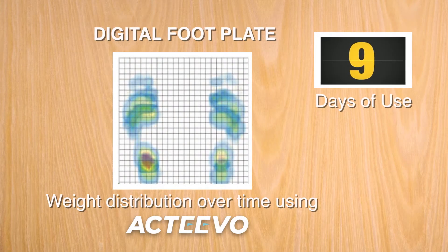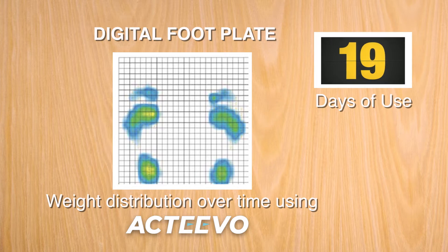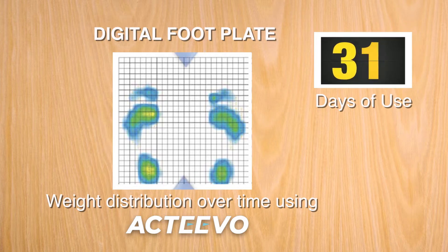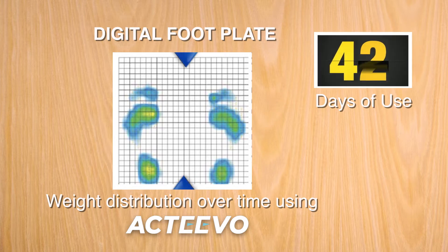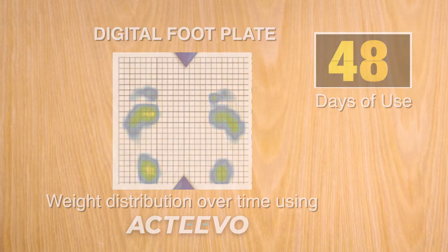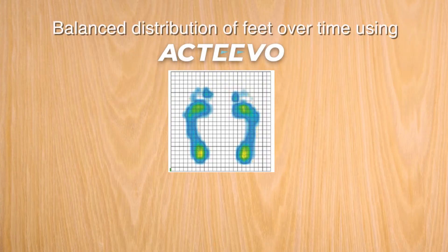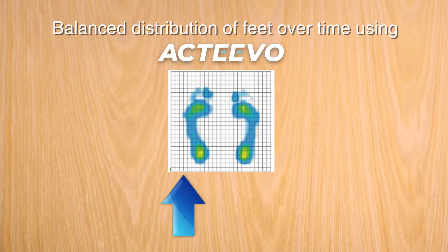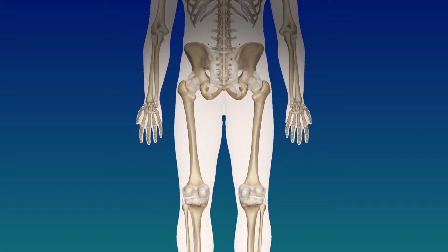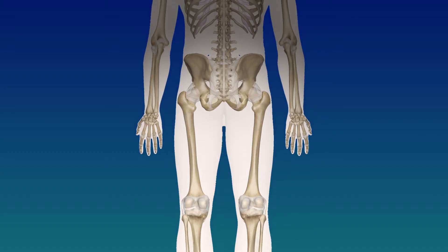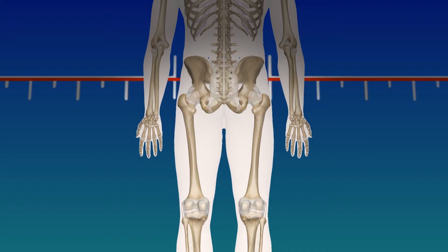The weight distribution gives us a quantitative marker of the mechanical changes occurring in the bone structure, the ligamentous tissues, and the muscle function of the foot. It's important that we see a proper distribution of foot alignment and foot pattern on the foot plate, because that is going to be a display of what's happening mechanically in the rest of the body.